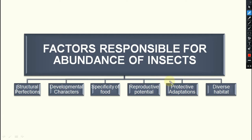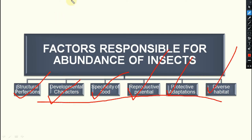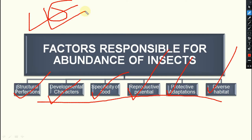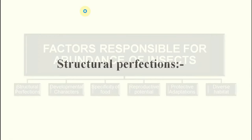We can categorize these factors into six categories: first is structural perfection, next is developmental characters, then specificity to food, then reproductive potential, reproductive adaptation, and lastly diverse habitat. These are the main six categories, under which some subcategories also exist, for which insects are the most abundant creatures.